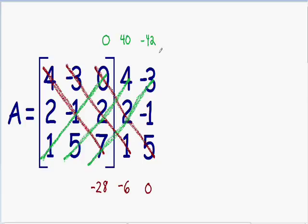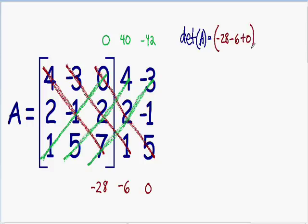After multiplying all the diagonals, finding the determinant of this matrix is really easy. We take the red numbers and subtract all the green numbers. The determinant of matrix A is equal to all the red numbers in parentheses: negative 28, negative 6, and 0, minus all the green numbers in parentheses: 0, 40, and negative 42.